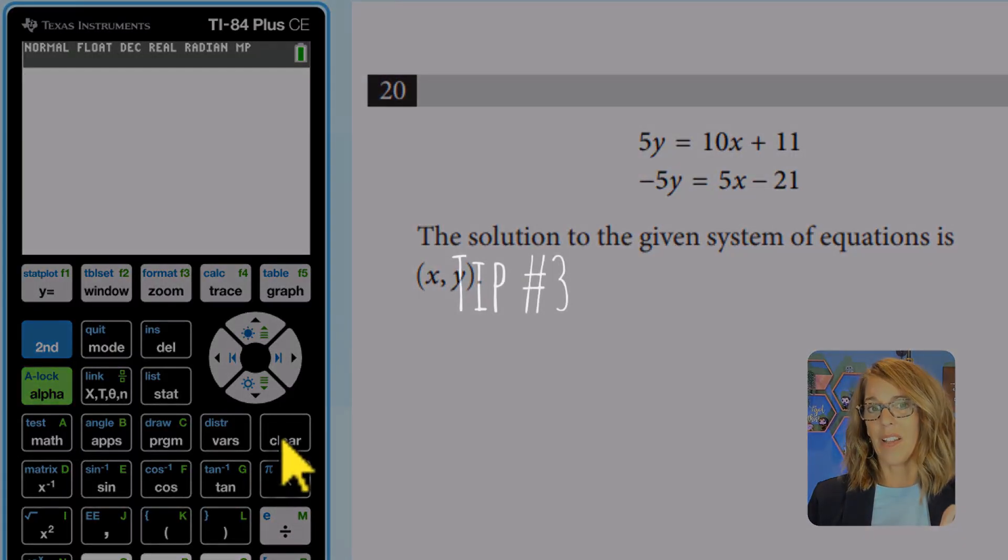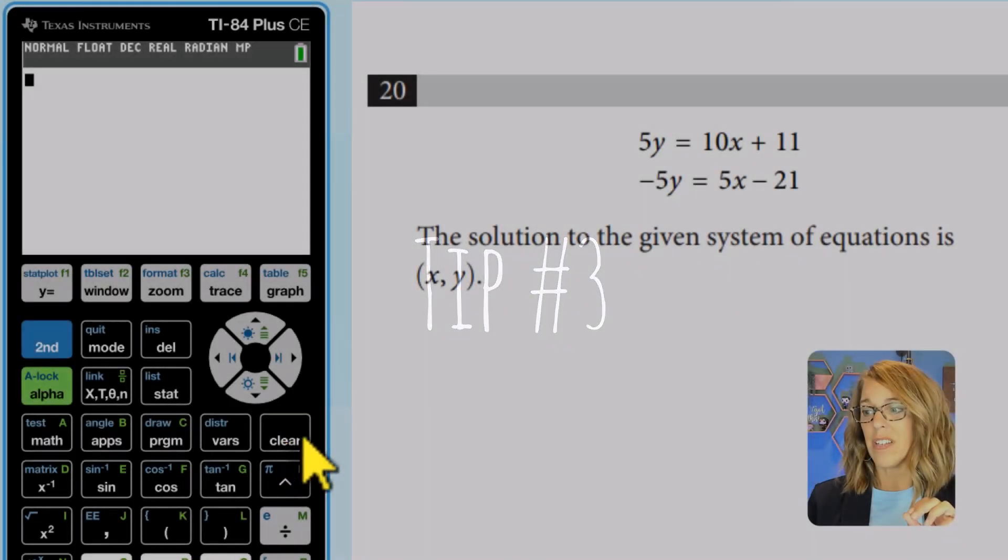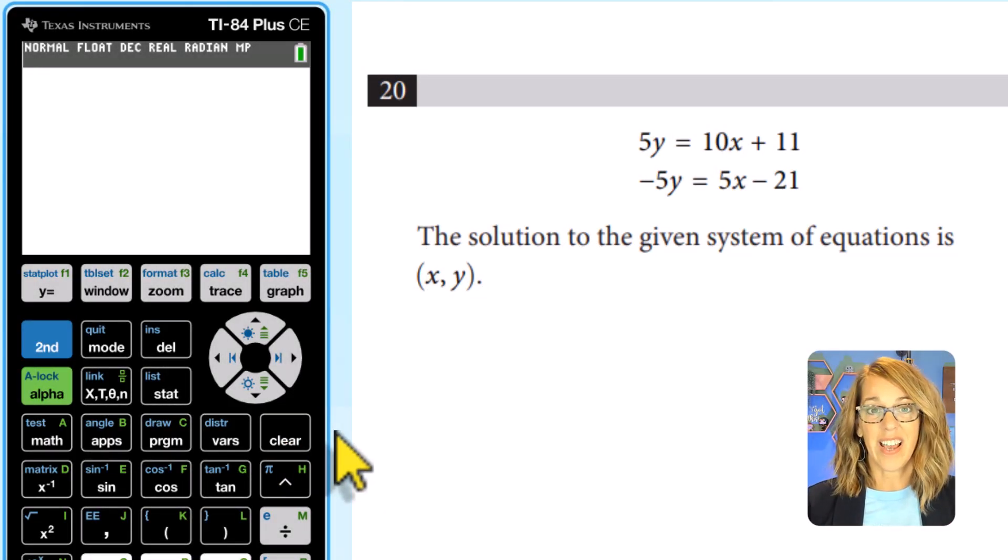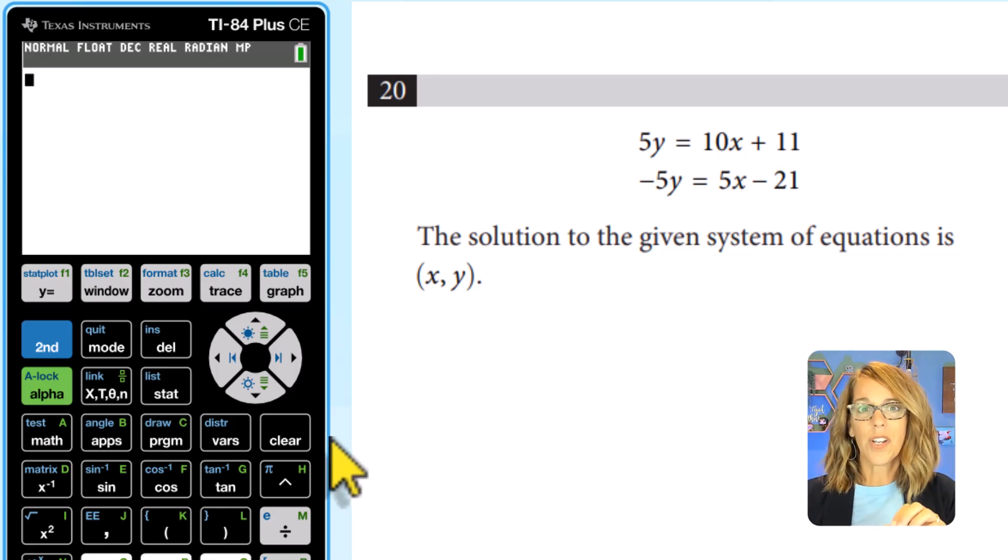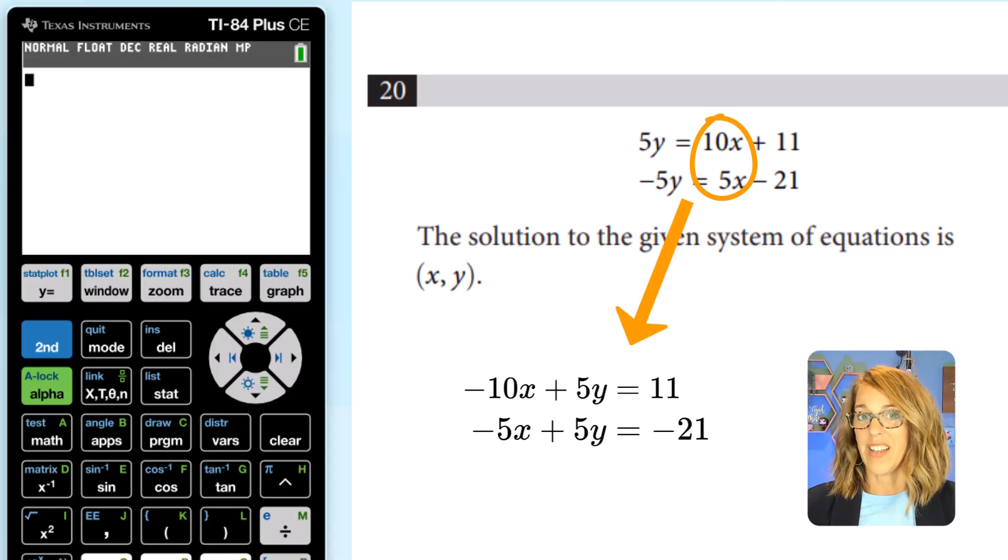Next up, I want to tackle a problem like this which is a system of equations. I've got two equations. There are two different ways to tackle this and I'm going to show you both of them starting with the one that I know all of you have on your calculator. Now before I can get this into my calculator, I need to have all of my variable terms on one side and my constants that 11 and negative 21 on the other side. So we're going to subtract the 10x. We're going to subtract the 5x and we're going to use the system in this form instead.